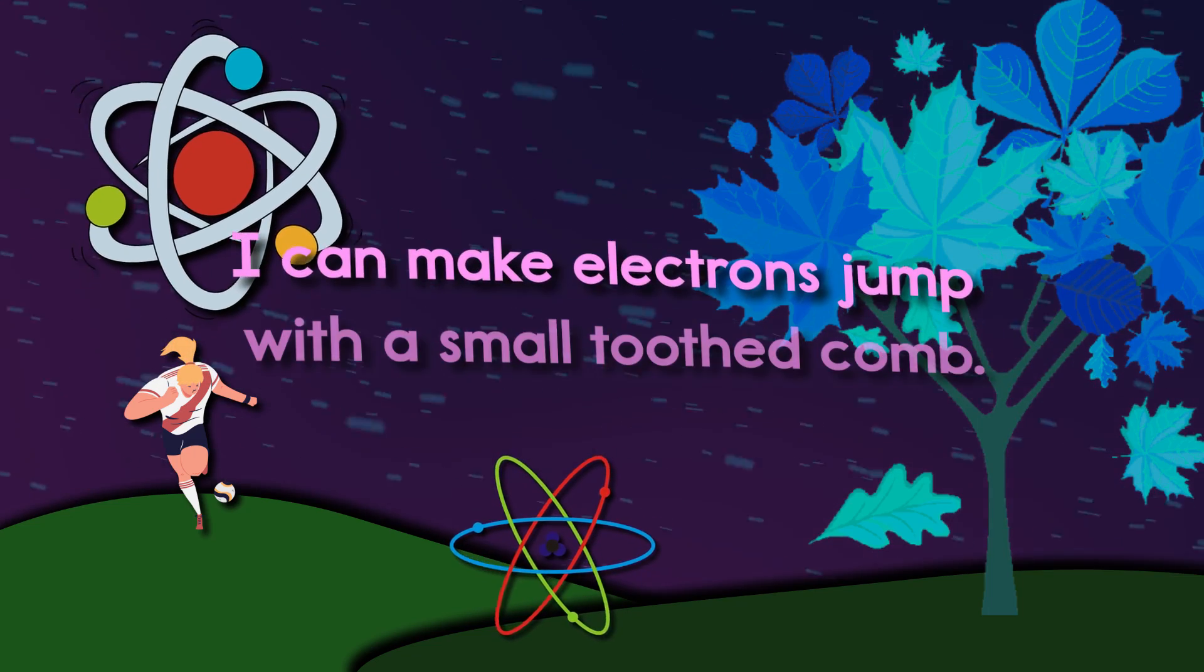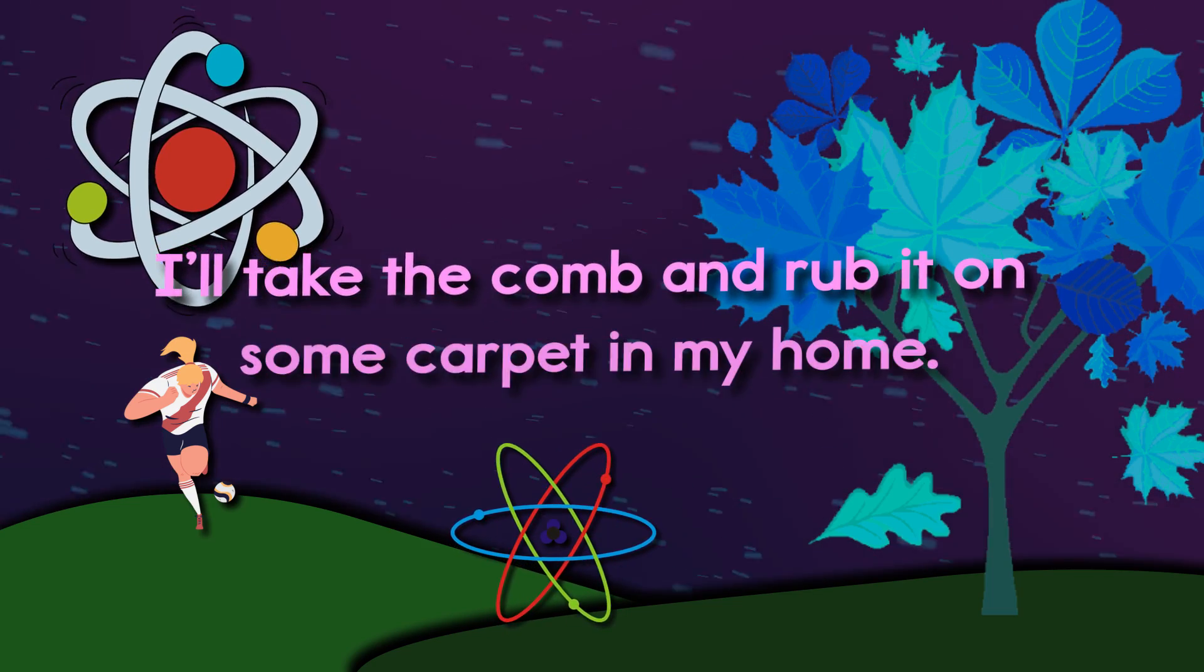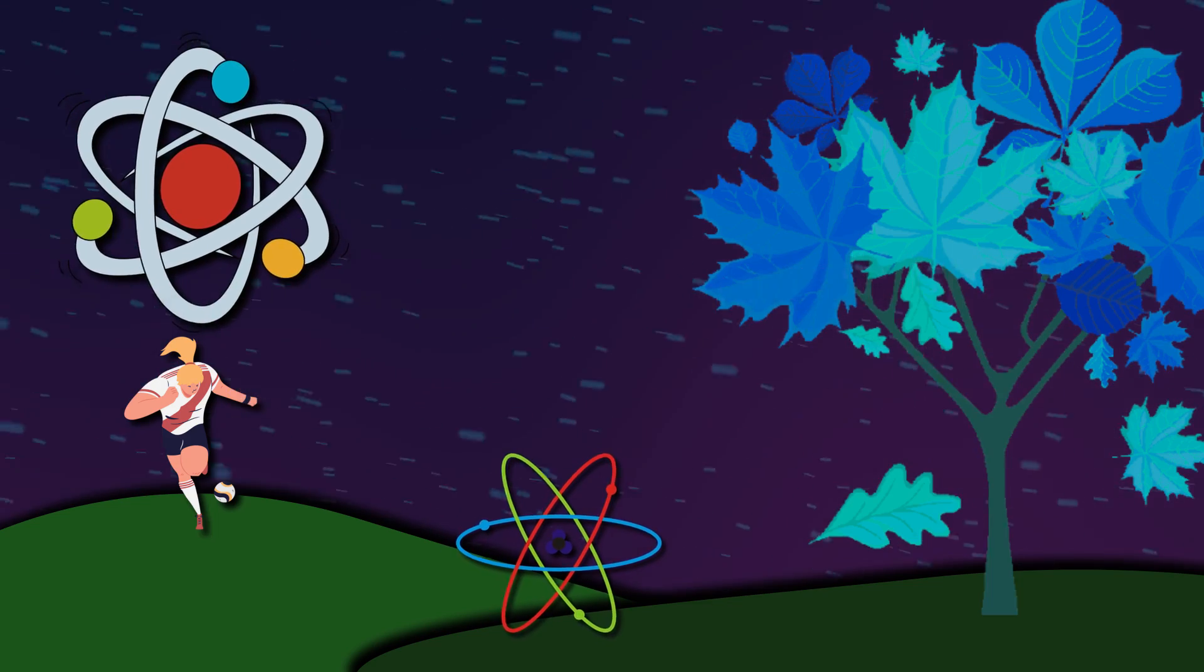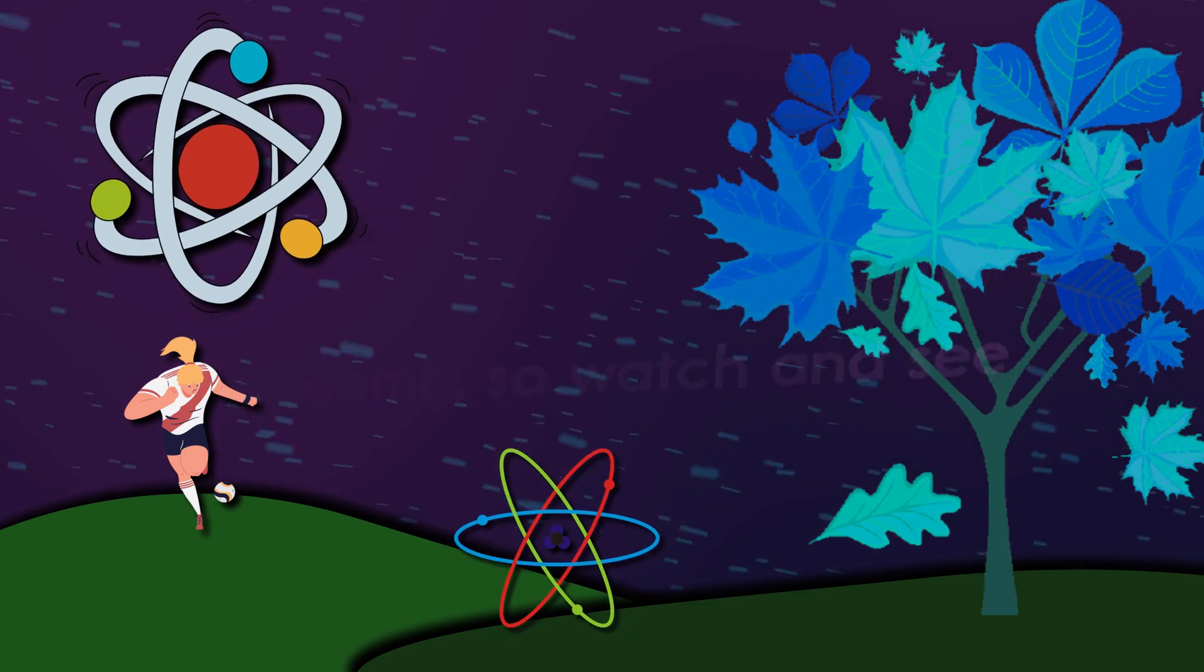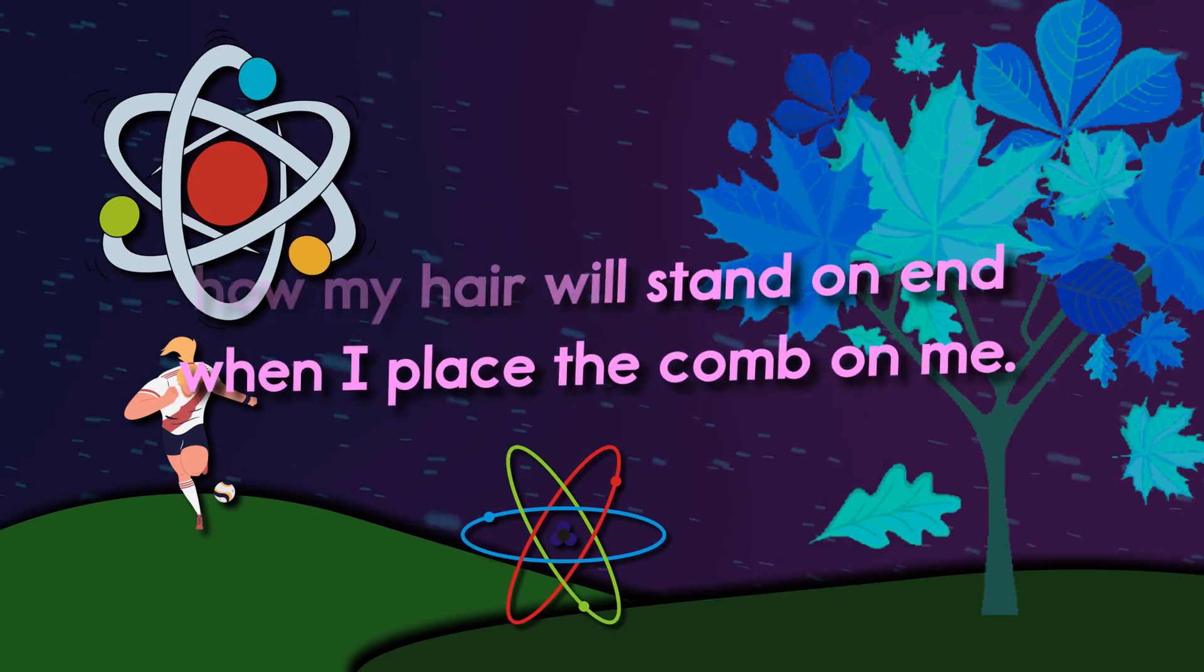I can make electrons jump with a small-toothed comb. I'll take the comb and rub it on some carpet in my home. Electrons will have jumped upon the comb, so watch and see how my hair will stand on end when I place the comb on me.